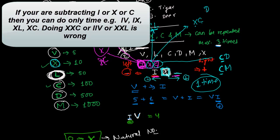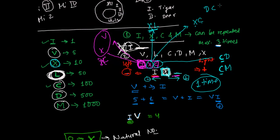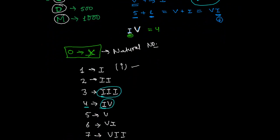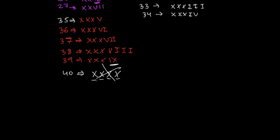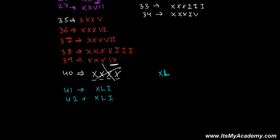For numbers like 600, 700, and 800, you start with D (500) and add X's. So for 40, we write XL — that is L minus X, which is 50 minus 10 equals 40. For 41, write XL then add 1: XLI. For 42, write XL and add two I's: XLII.